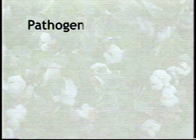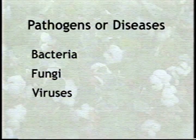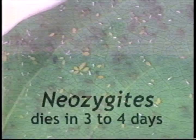Pathogens or diseases form our last allied battalion. Bacteria, fungi, and viruses can inflict great harm by causing vast epidemics in the pest population. Aphids are sometimes hit by the fungal disease called neozygitis. The fungus grows inside the aphid, which dies in three to four days. Aphids killed by this disease can be recognized in the colony by a gray fuzzy mold covering their bodies. This fungus sometimes spreads rapidly across the field, massacring the aphid population.